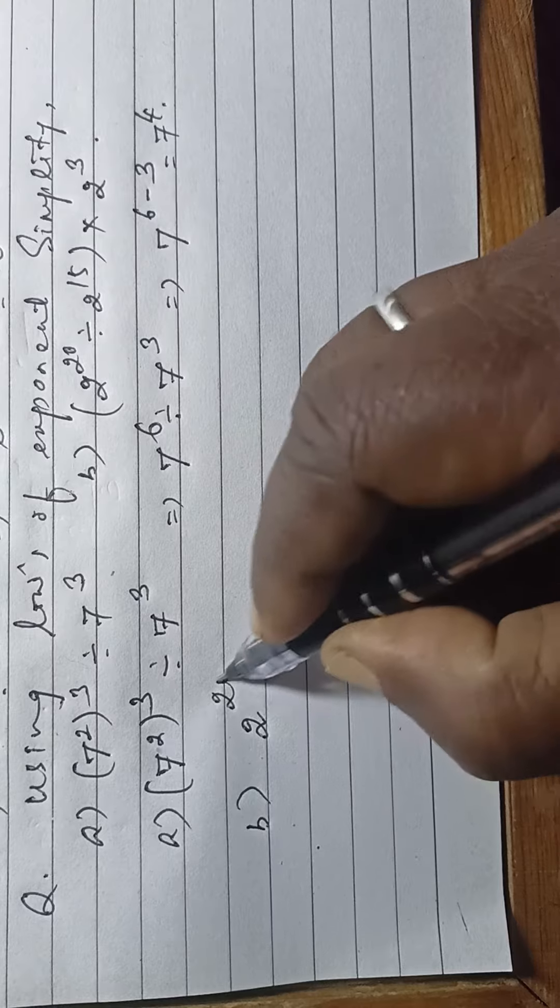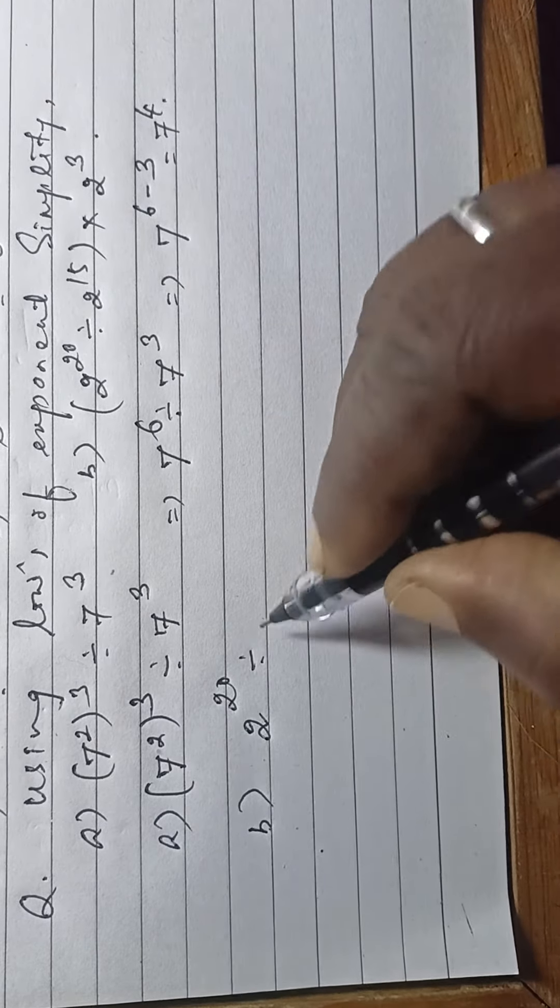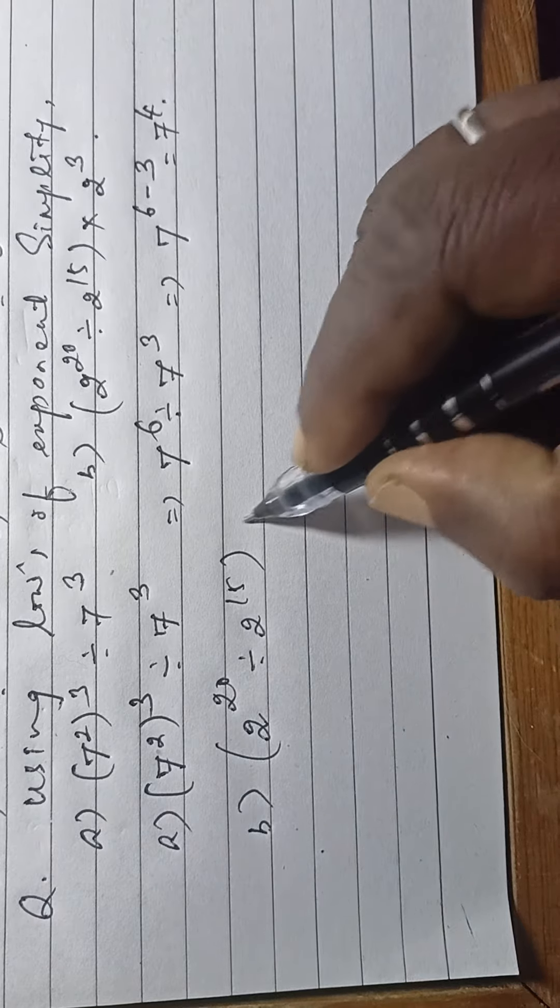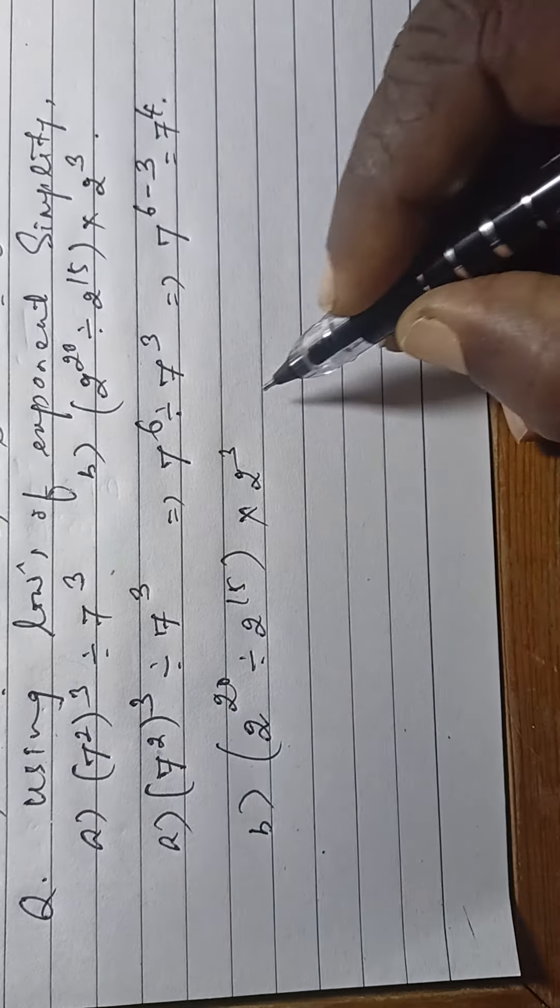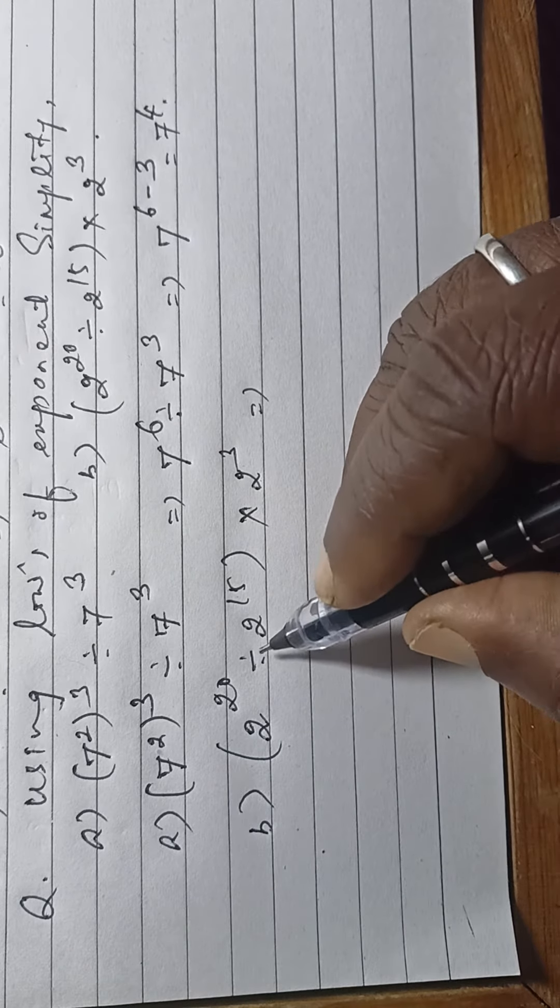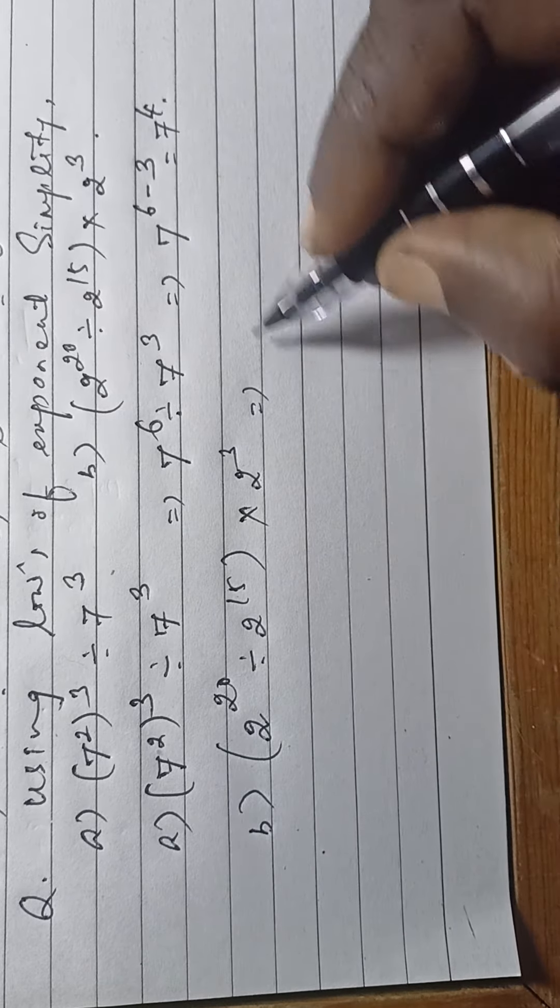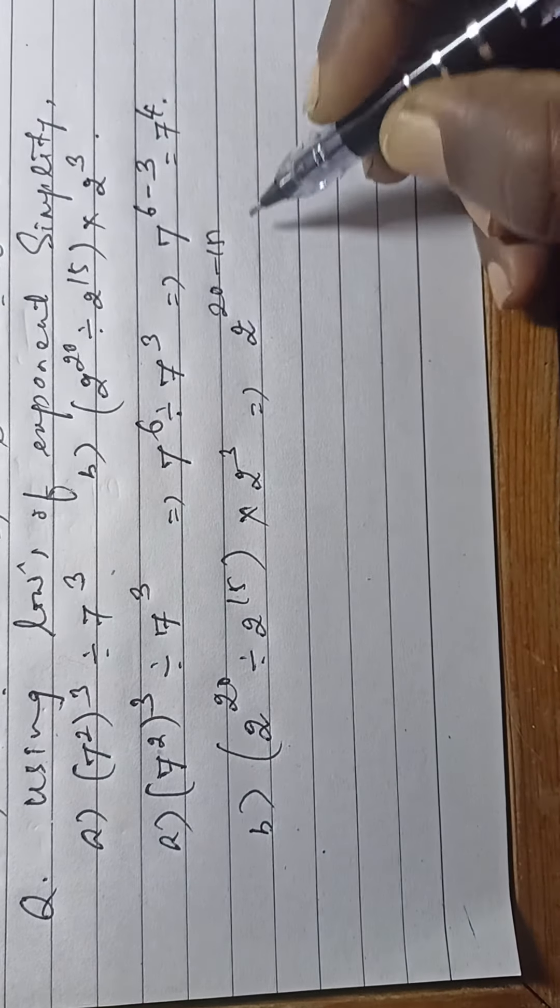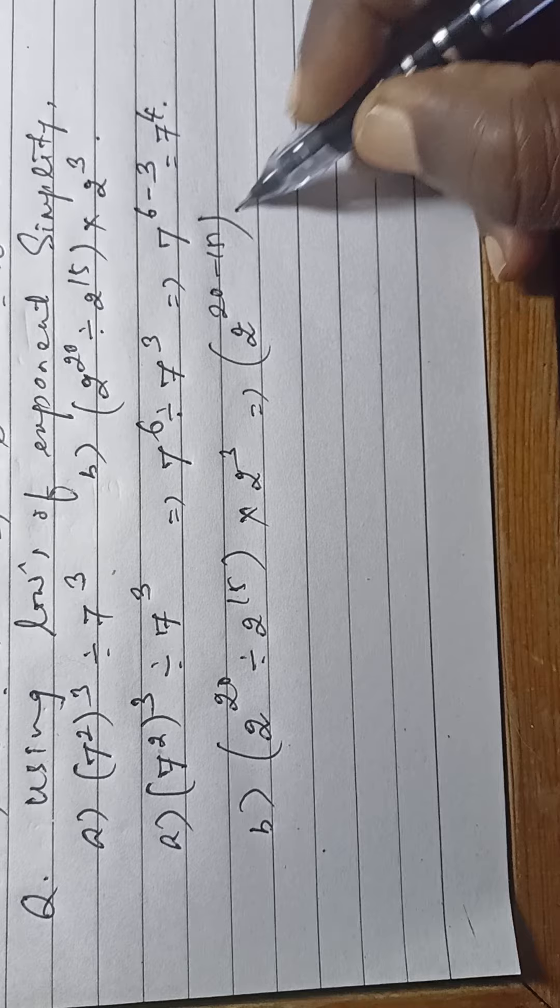The bases are equal and the condition is division, so 2 to the power 20 minus 15, whole bracket, times 2 to the power 3. This gives us 2 to the power 5 times 2 to the power 3.